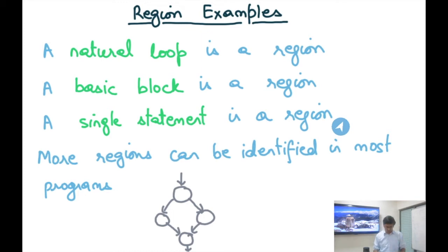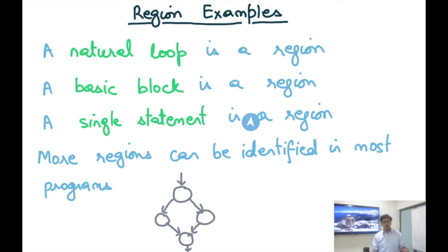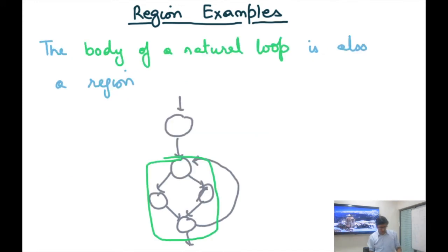There can be multiple ways to construct regions, and more regions can be identified in most programs. For example, language-level scoping blocks create additional regions. You can have a hierarchy of regions whatever choice you take — natural loops at the highest level, then basic blocks, then single statements, and above the natural loop the procedure, as discussed in the previous module. Notice that the definition of a region also allows us to call the body of a natural loop without the back edge a region — the acyclic region within a loop. Here the back edge goes from the last node back to the header.